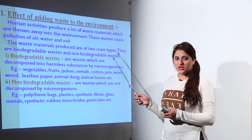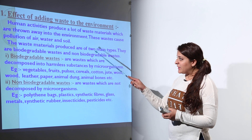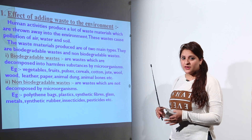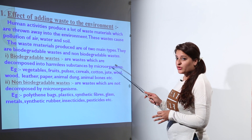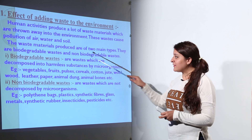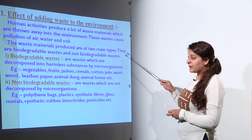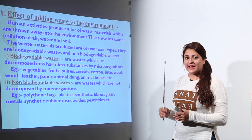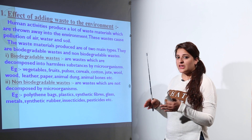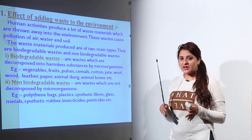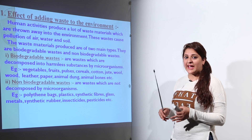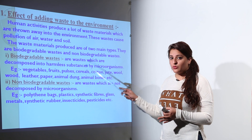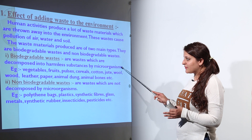Some of them include air pollution, water and soil pollution. The materials which are produced as waste from industries or from any other phenomena are of two types: one is the biodegradable waste and the other is the non-biodegradable waste. Biodegradable waste is that waste which can be decomposed into harmless substances by the action of microorganisms.